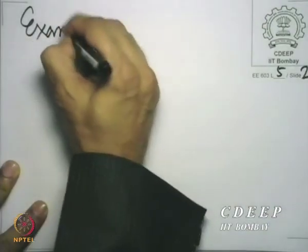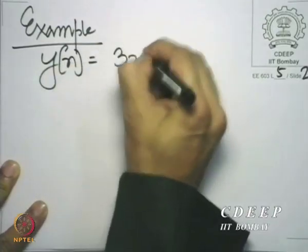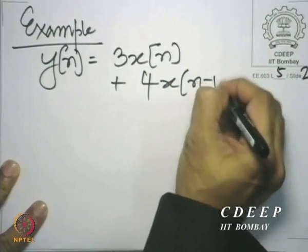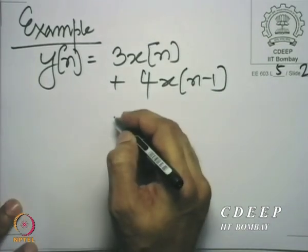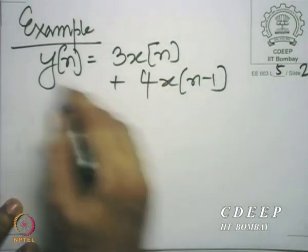Let us take an example of a shift invariant system. We can go back to the same system we discussed as linear: y[n] = 3·x[n] + 4·x[n−1]. When I put x[n] into the system, I get y[n] according to this.